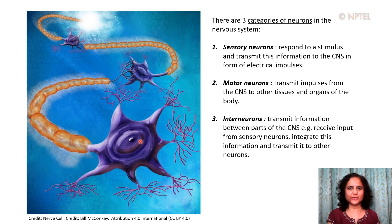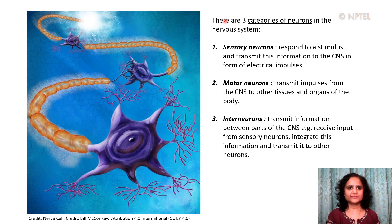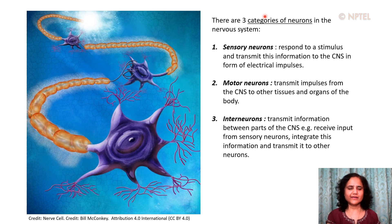There are three categories of neurons in the nervous system. First, sensory neurons respond to stimuli and transmit this information to the central nervous system in the form of electrical impulses. Motor neurons transmit impulses from the central nervous system to other tissues and organs of the body. Interneurons are connecting neurons that transmit information between parts of the central nervous system — for example, they receive input from sensory neurons, integrate this information, and transmit it to other neurons.